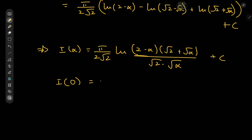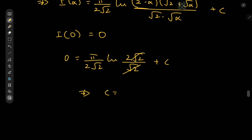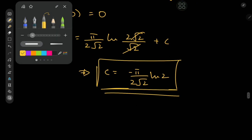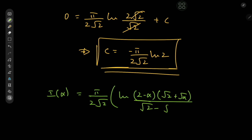Using the initial condition I(0) = 0: plugging in α = 0 gives 0 = (π/(2√2))·log[2·√2/√2] + C, which simplifies to C = −(π/(2√2))·log 2. So the integral function is I(α) = (π/(2√2))·log[(2 − α)(√2 + √α)/((√2 − √α)·2)].